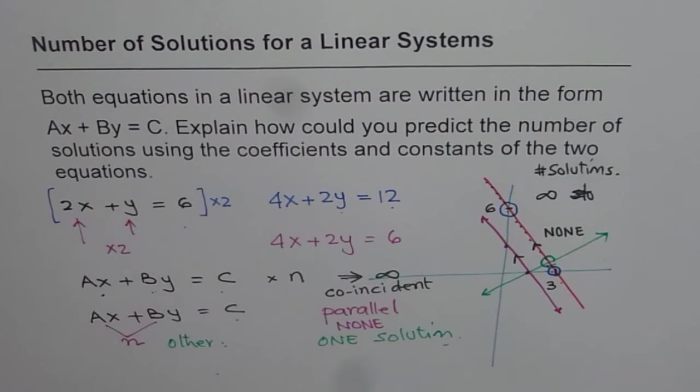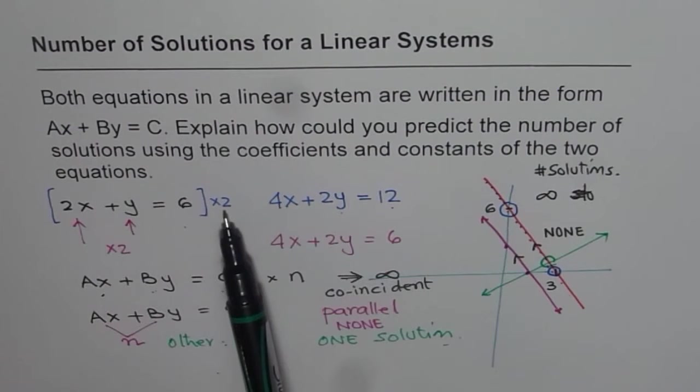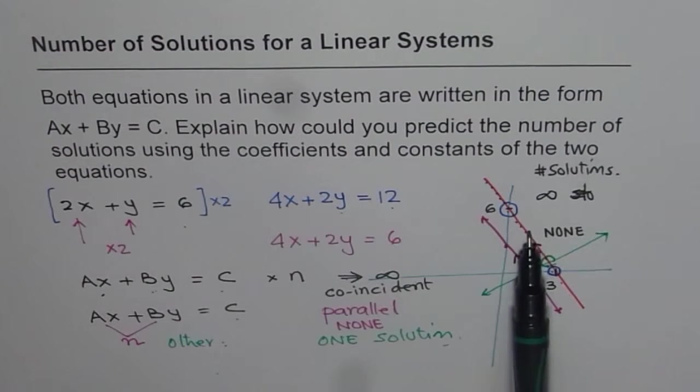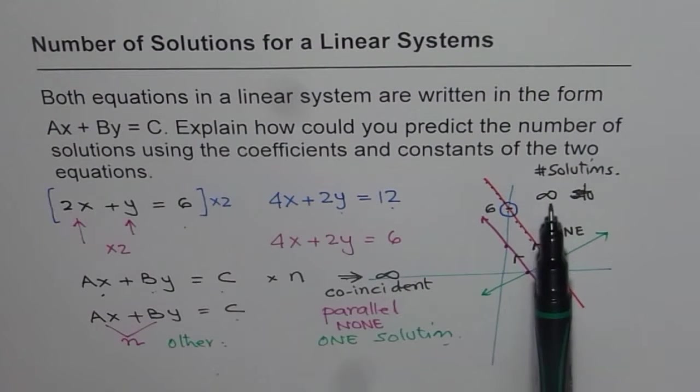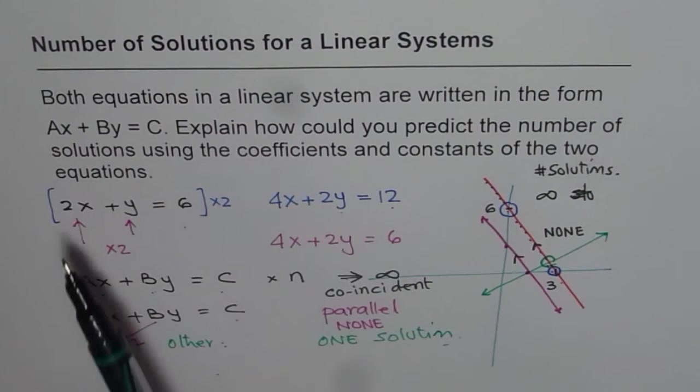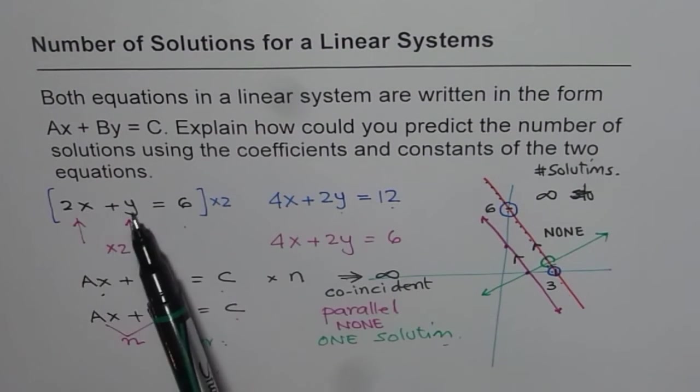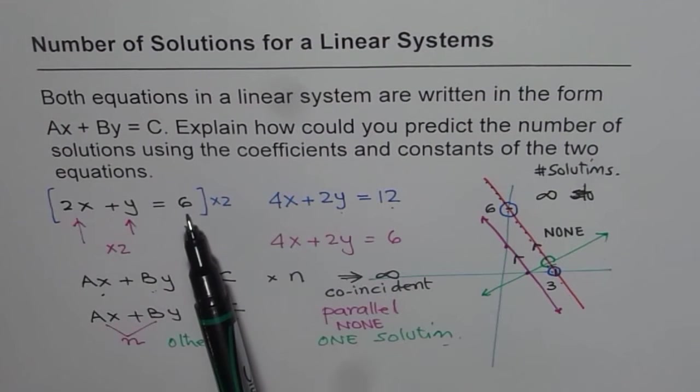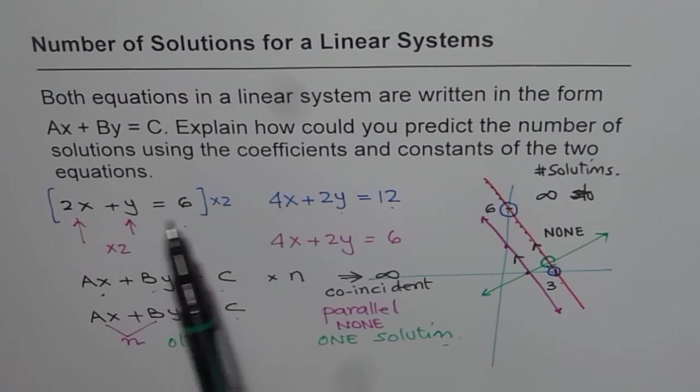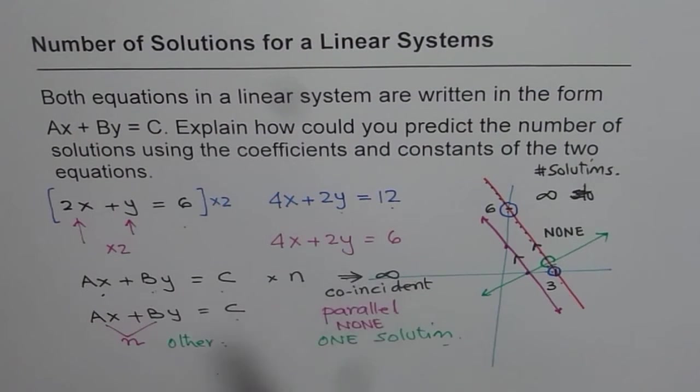So if the equation is a multiple of the other equation, in that case, both are representing the same equation, and there are infinite number of solutions. However, if the coefficients are multiple of one another, but not the constant part, then they are parallel lines, and no solutions. And in all other cases, the lines are not parallel, they are not coincident, and they will always intersect at one point. So that is how we can explain it. Thank you.